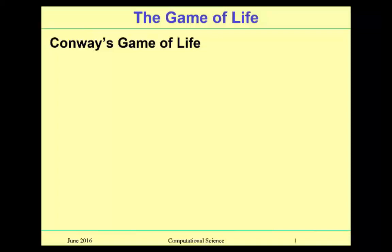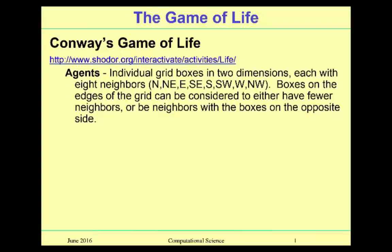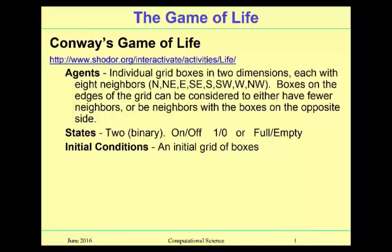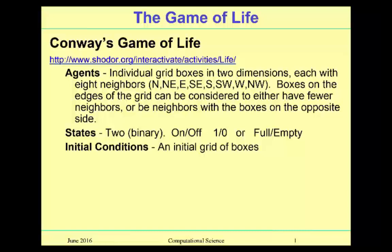It turns out this particular model and the rules we are going to use have been studied pretty extensively and given the title 'Game of Life.' Our agents are individual grid boxes in two dimensions with eight neighbors. Boxes on the edge of the grid can be considered to have fewer neighbors or be neighbors with boxes on the opposite side — we're deciding to use the toroidal boundary conditions. Two binary states: on or off, one or zero, or full or empty. The initial conditions are the initial grid of boxes, with lots of possible initial conditions: all on or all off, a single cell on, some patterns, or randomly distributed.